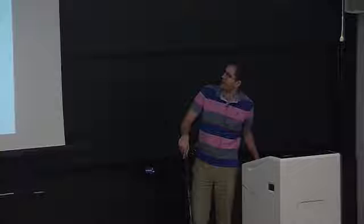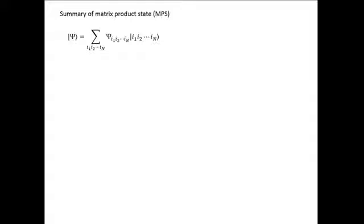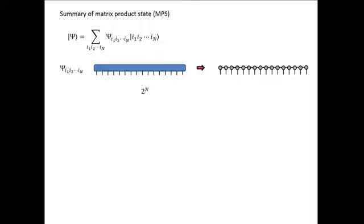So, summary for matrix product states — what we saw yesterday and the day before. We have the wave function psi of n, and that's given by expanding it in a local basis, which gives us a tensor psi with n indices, i1 all the way to i_n. We can diagrammatically represent it this way, and we have 2^n or d^n coefficients. A matrix product state is a way of decomposing that tensor in terms of a collection of small tensors organized in a one-dimensional array.